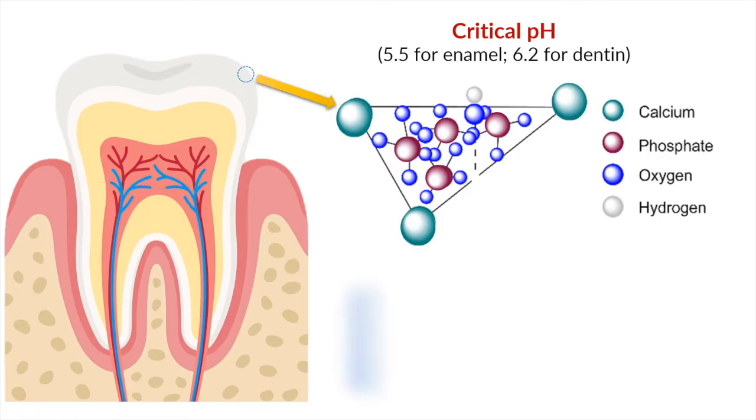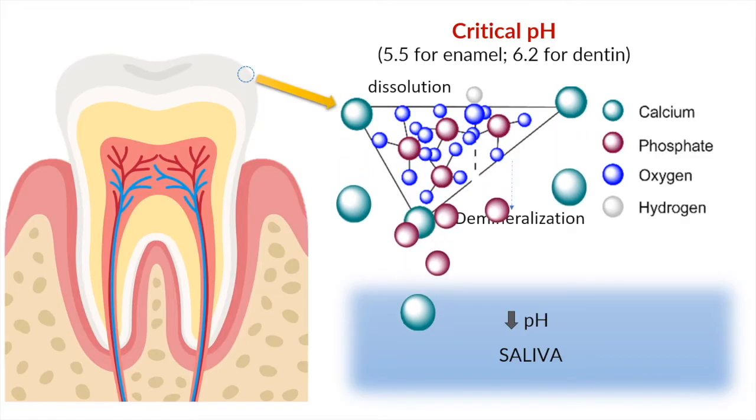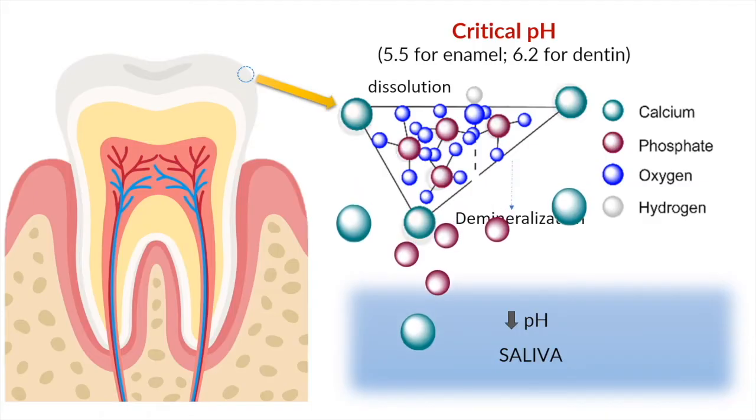At this critical pH, the hard tissues undergo demineralization. As the hydroxyapatite crystal crumbles, calcium and phosphate ions leach out into the saliva, leading to weakening of the hard tissue structure.